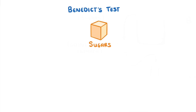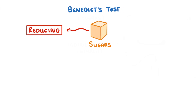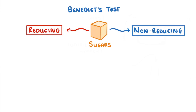Sugars are the small units that all carbohydrates are made of and they can be split into two types: reducing sugars and non-reducing sugars. You don't really need to know the difference between these two, but just remember that the Benedict's test only tests for reducing sugars.